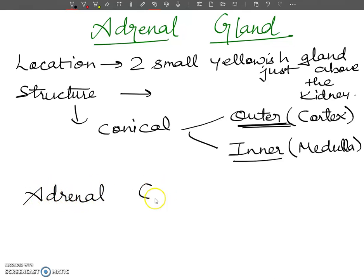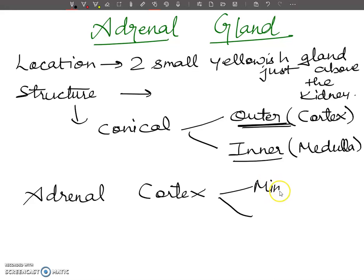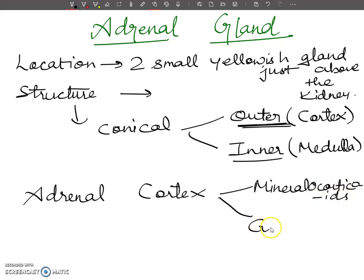The adrenal cortex secretes two hormones: the first is called mineralocorticoids, and the second is called glucocorticoids.